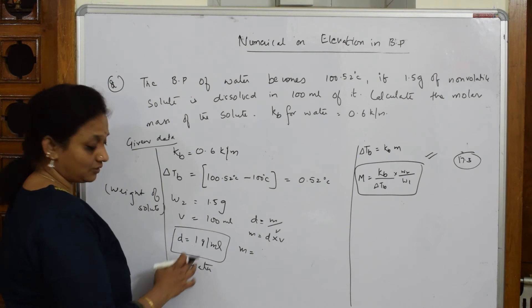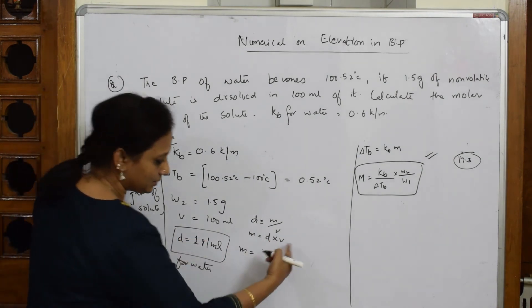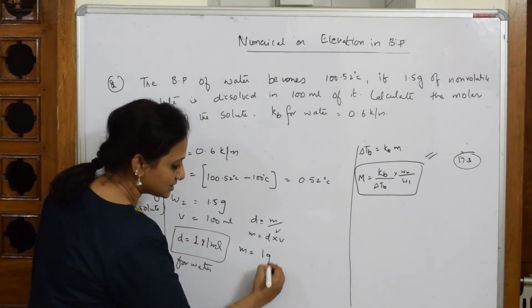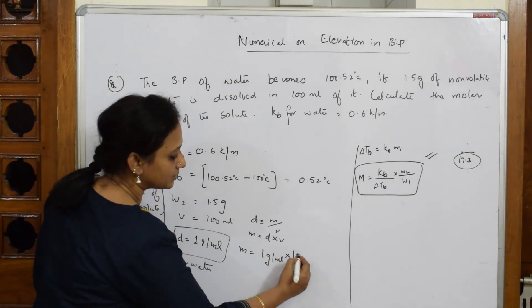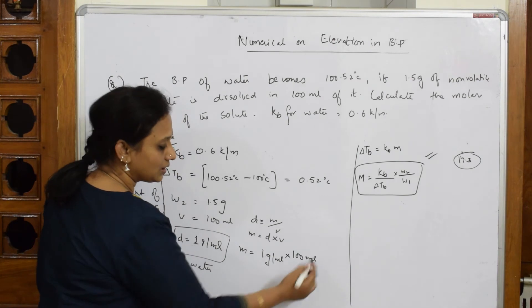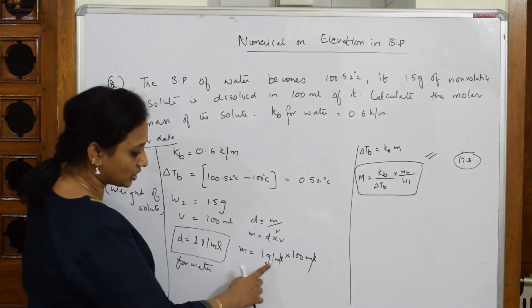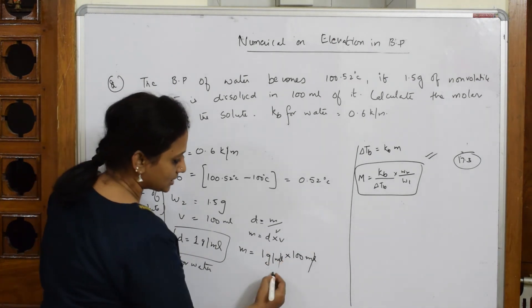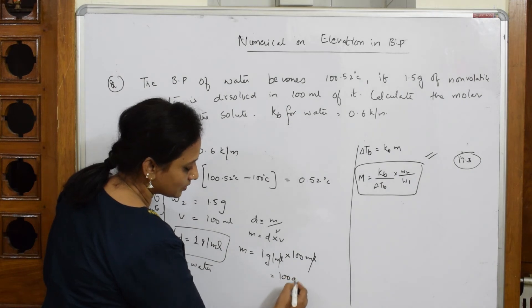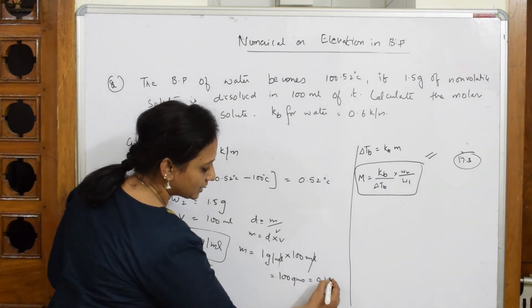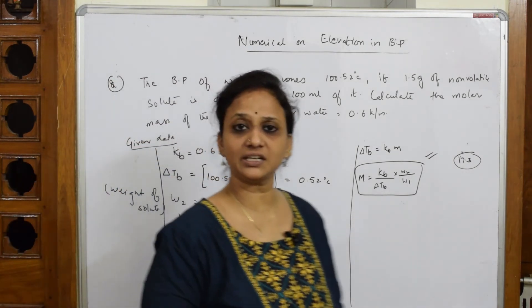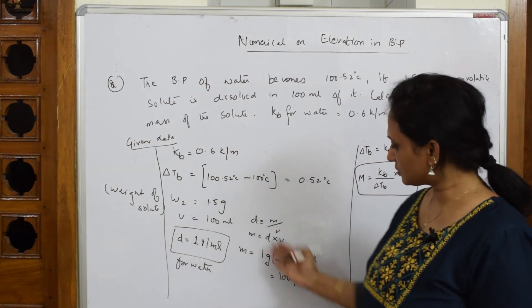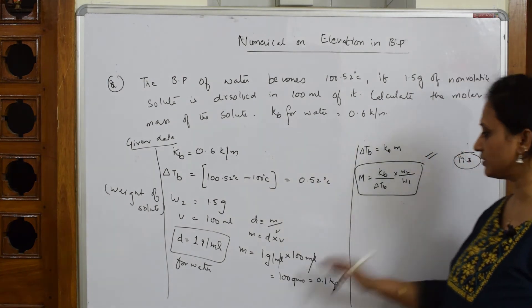I am writing here: density is equal to 1 gram per ml into volume given is 100 ml. Now see, ml and ml gets cancelled. What are you left with? 100 into 1, this is your 100 grams, which is equal to 0.1 kg. Why did I write kg? Because I have to always consider the weight of the solvent in kg. So whenever volume is given, try to use this. Convert to 0.1 kg.